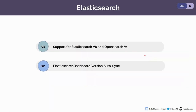For Elasticsearch, we have added support for Elasticsearch version 8 and OpenSearch version 1. From now on, you can perform all OpsRequests such as upgrade, vertical scaling, horizontal scaling, and TLS rotation for Elasticsearch version 8 and OpenSearch version 1. Another interesting feature is Elasticsearch dashboard version autosync — so when you upgrade the version of Elasticsearch or OpenSearch, the Kibana or OpenSearch dashboard version will automatically sync with the database version, so you do not need to worry about the dashboard version.